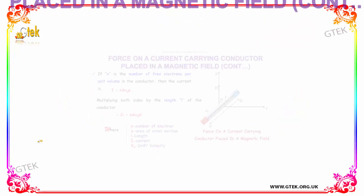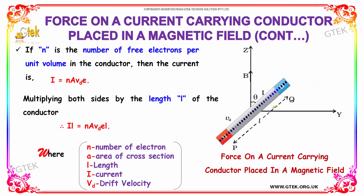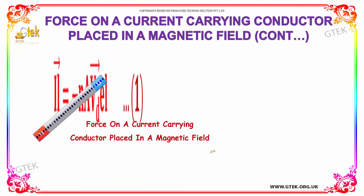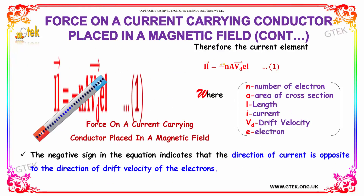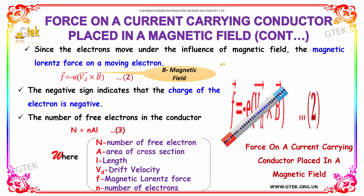You are able to see the direction of current is in this direction, while the drift velocity is in this direction — that is why it is indicated using a negative sign. Now, the electrons move under the influence of the magnetic field. The magnetic force F vector is equal to minus e times VD vector cross B vector. The negative sign indicates that the charge of the electron is negative.